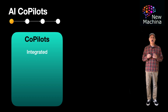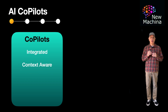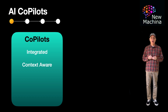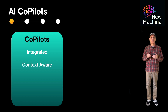Co-pilots provide seamless and unobtrusive support to users in all of these use cases. AI co-pilots are context aware. They operate by understanding the context of the task at hand. For example, in coding, an AI co-pilot can suggest code completions, identify potential bugs, and offer best practices based on the current code context.